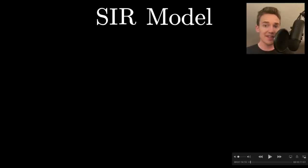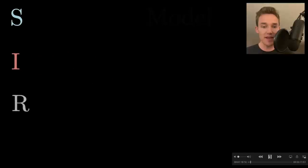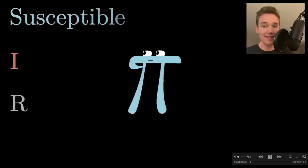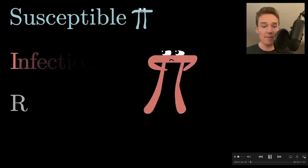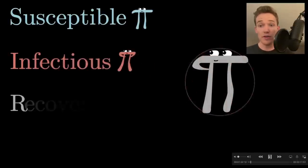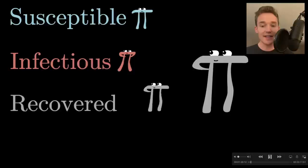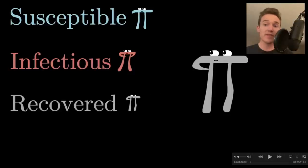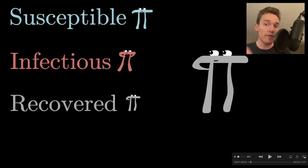What you'll be writing is something known as an SIR model. S stands for susceptible — it describes a kind of person that might be in your model. I stands for infectious, and R stands for recovered or sometimes removed. The idea is that you transition from the first state towards the others: susceptible people catch the disease, people who catch the disease eventually recover or are removed from the simulation.